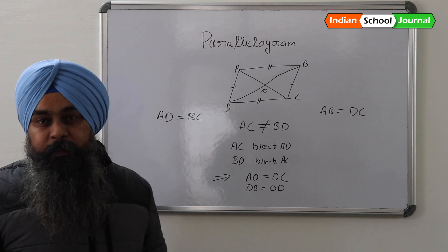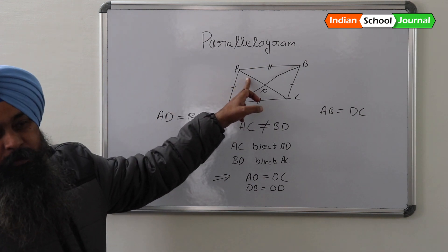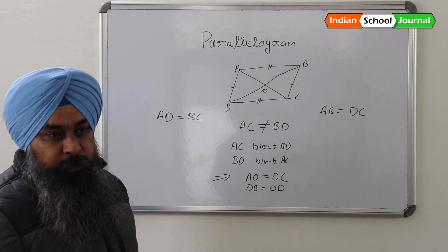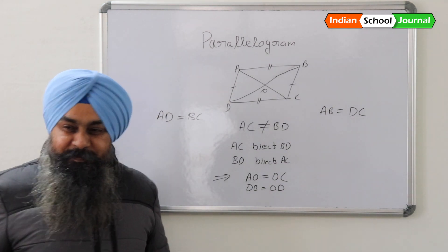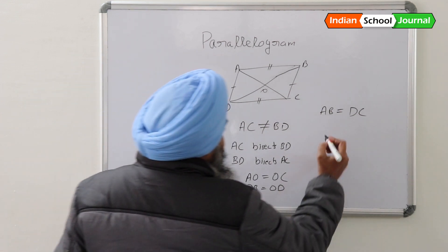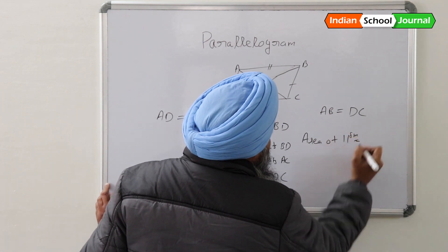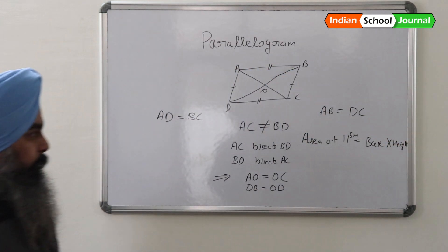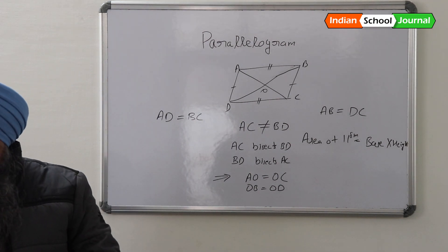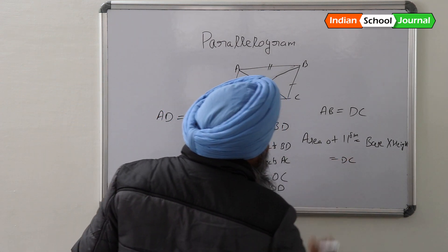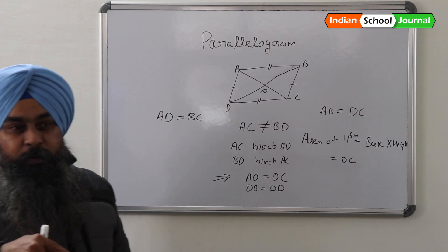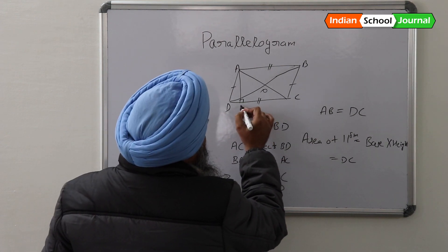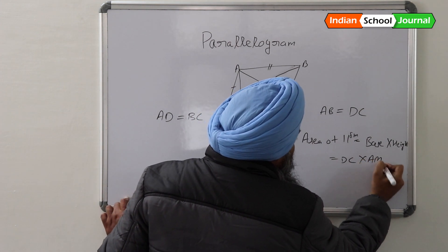The next property is what is going to happen if a single diagonal is just drawn? What will be the effect of that on the area of a parallelogram? The formula for area of a parallelogram is base multiplied by height. The base would be DC and the height would be a perpendicular line drawn from A to DC. We call this AM.